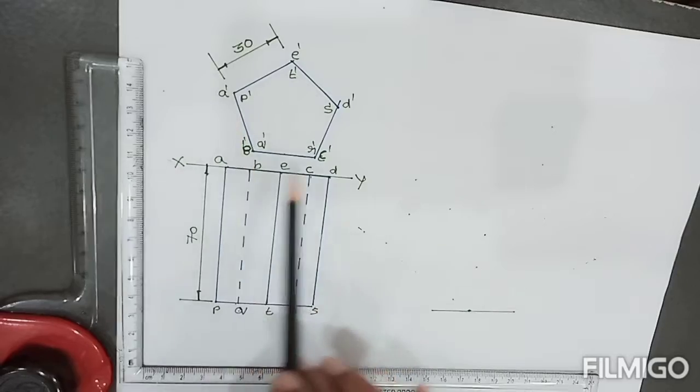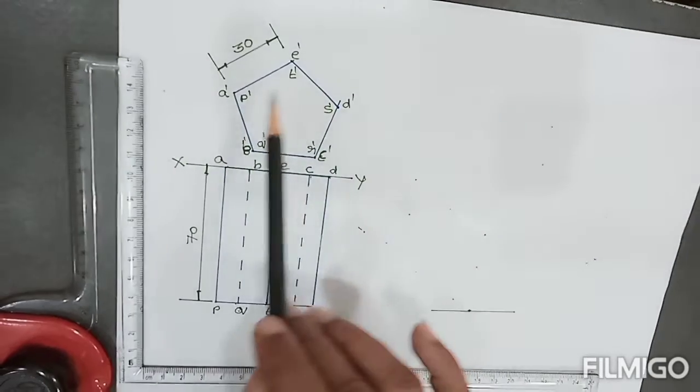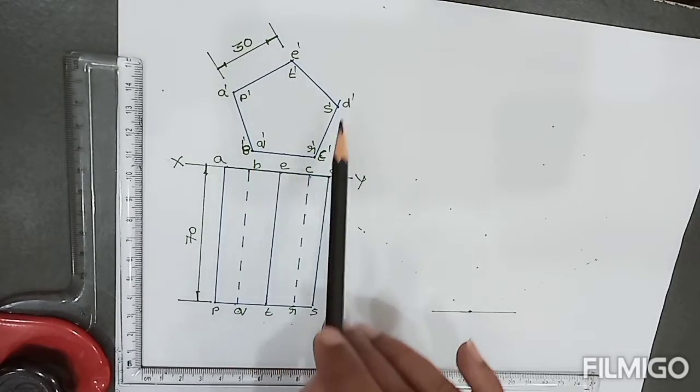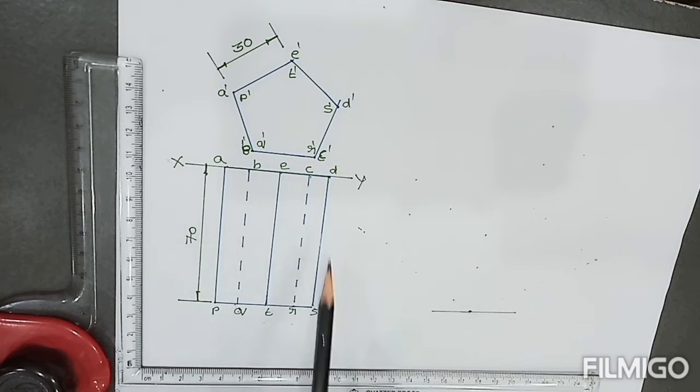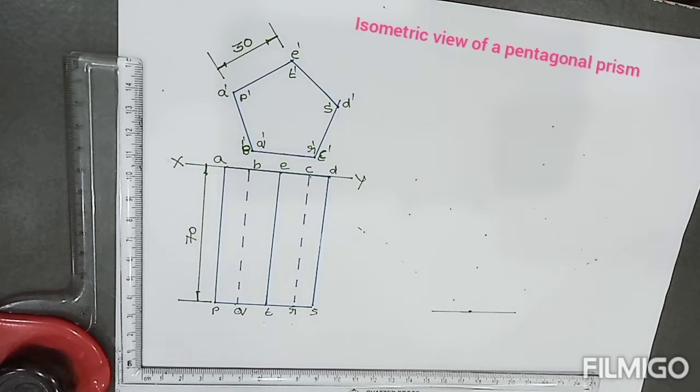In front view we'll get base of the pentagonal prism, that is pentagonal shape. Top view will get rectangle shapes. After drawing the front view as well as top view, then we have to enclose the base, that is pentagonal shape, in a rectangle.